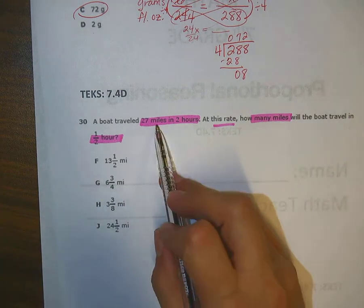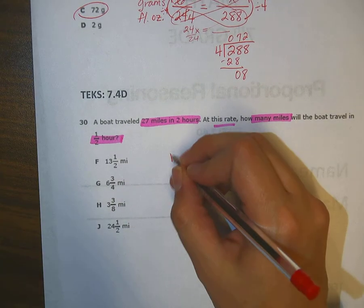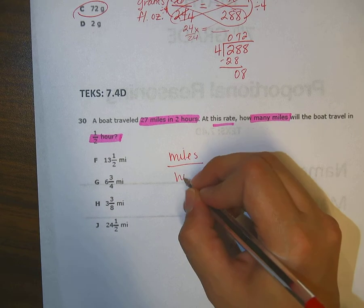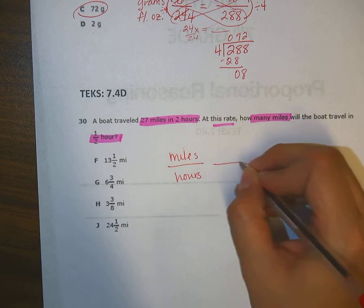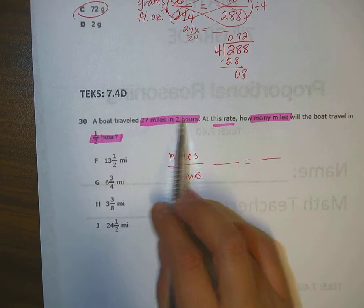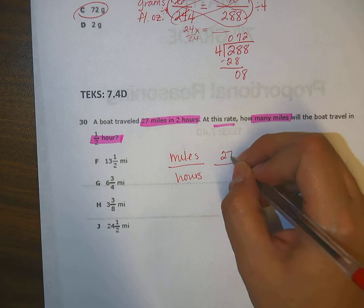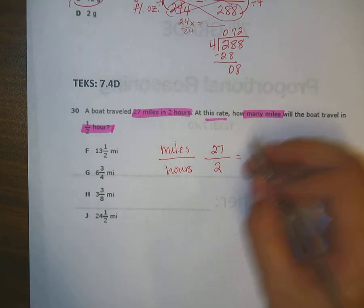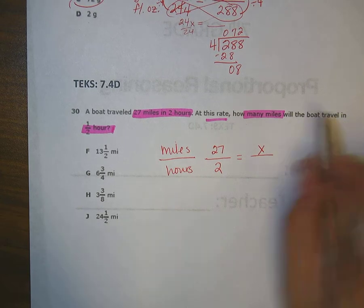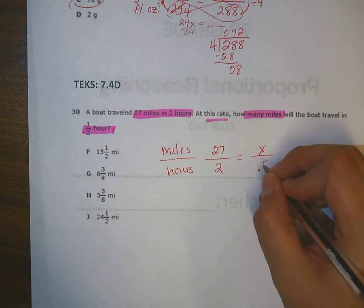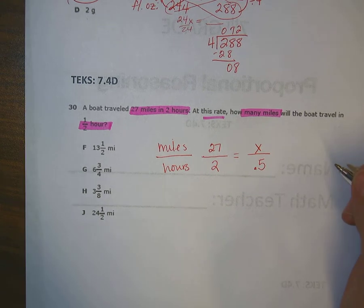It says how many miles will the boat travel in this amount of time? Two things. We have miles and we have hours. I'm going to use those as my labels. Miles on top, hours on bottom. And as I read, I know that these two things go together. So 27 miles is on top. Two hours is on bottom. And then it says how many miles, that's my unknown, will the boat travel in a half hour? So instead of using half, I'm going to use 0.5.